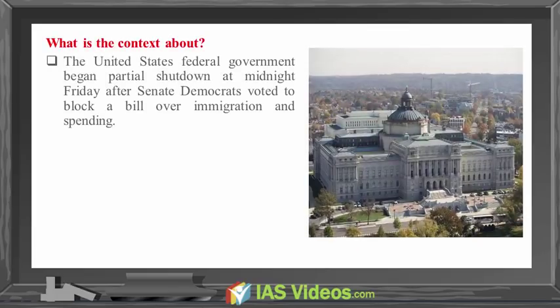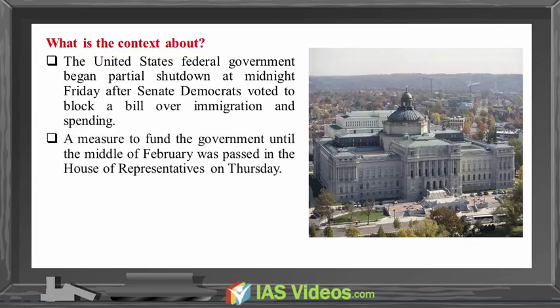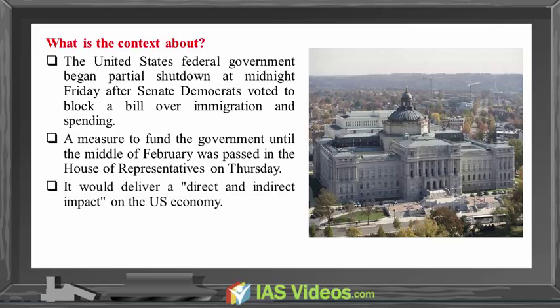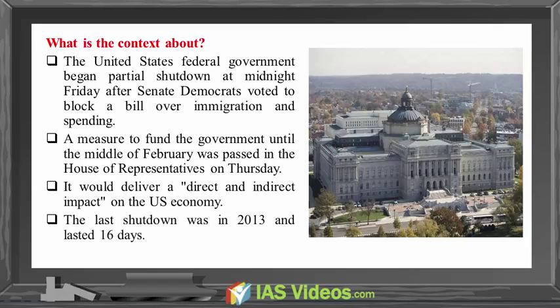What is the context? The United States federal government began a partial shutdown at midnight Friday after Senate Democrats voted to block a bill over immigration and spending. A measure to fund the government until the middle of February was passed in the House of Representatives on Thursday. It would deliver a direct and indirect impact on the U.S. economy. The last shutdown was in 2013 and lasted 16 days.